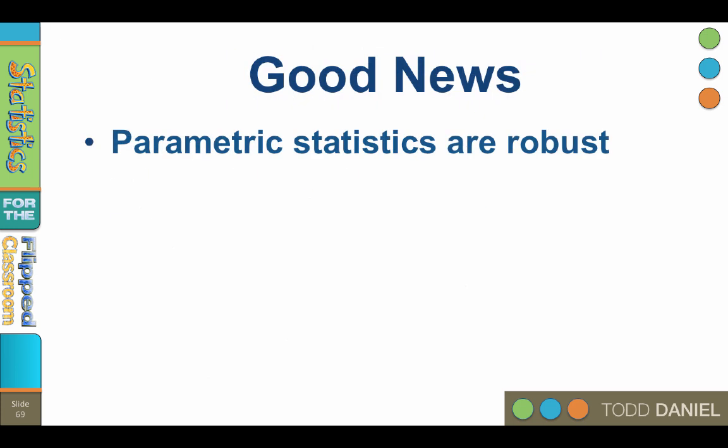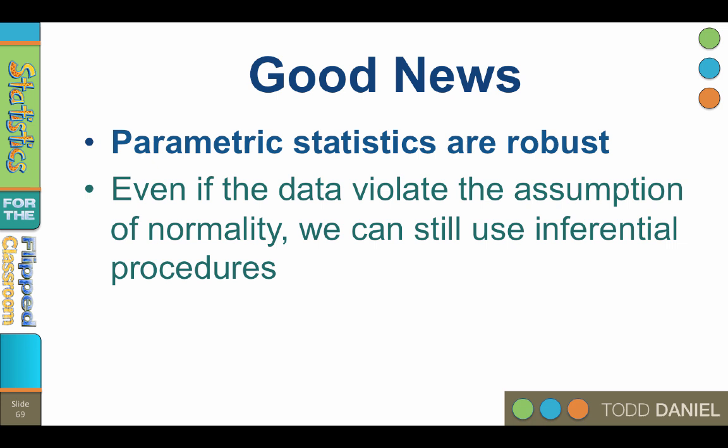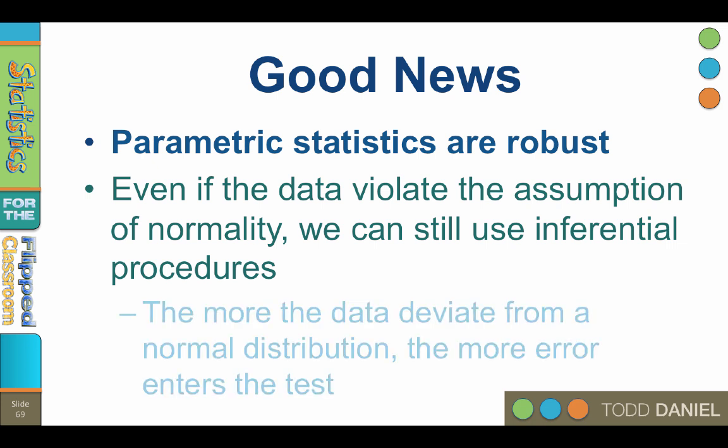So now you know what you need to know to check your assumptions. And I have some good news: parametric statistics are robust. That means that even if your sample data violate the assumption of normality and are not normally distributed, you can still use inferential procedures. The lecture on the central limit theorem will help explain why. However, the more that your data deviate from a normal distribution, the more error enters the test. So you should be particularly careful on interpretations when the result of your statistical test is right on that p equals .05 cutoff.